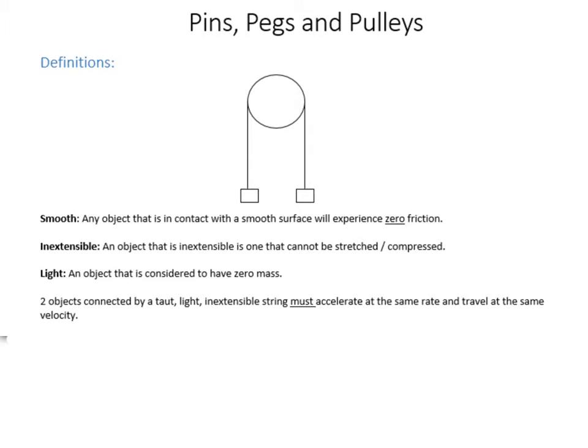One of the key things when doing pulleys is that objects connected over a pulley, as long as the string between them is taut, light and inextensible, this object's acceleration must be the same as this object's acceleration. Obviously they're going to be in opposite directions but the magnitude must be the same.